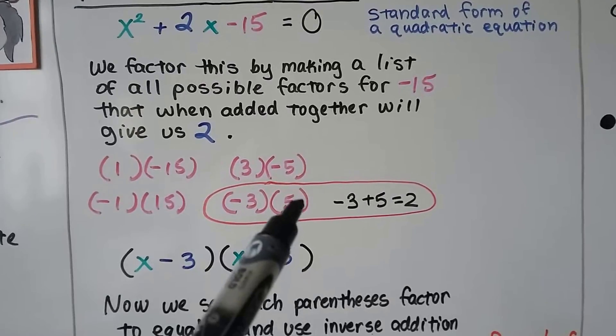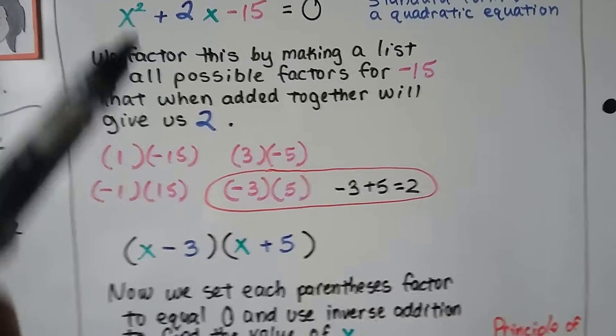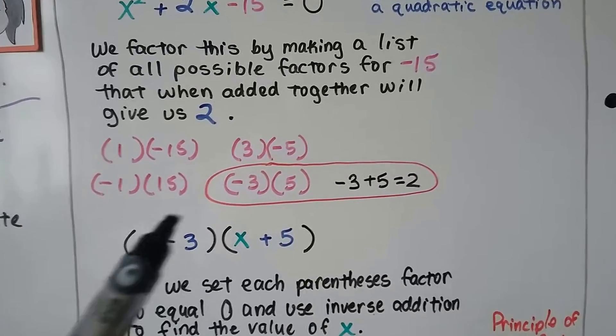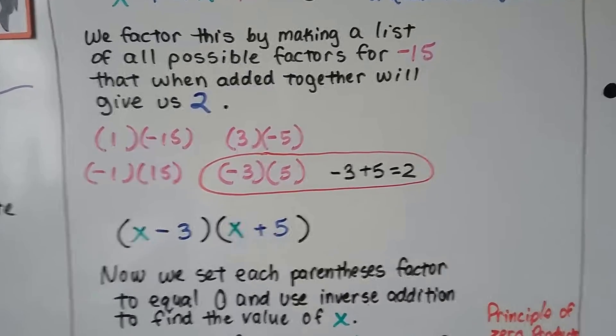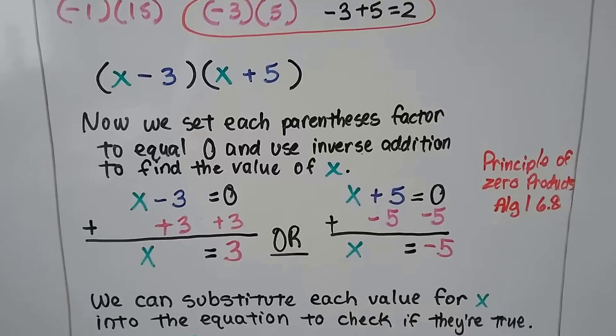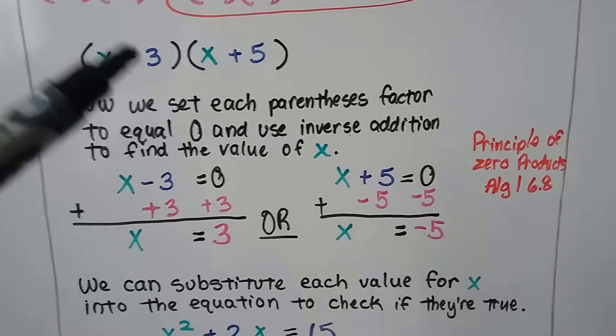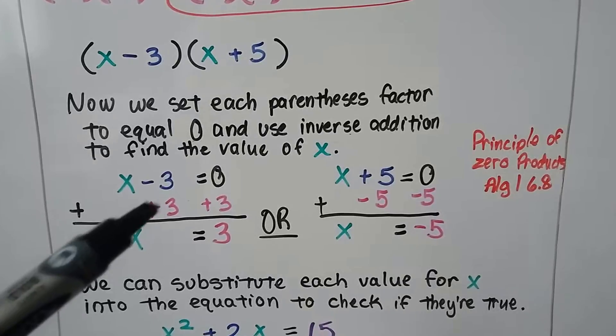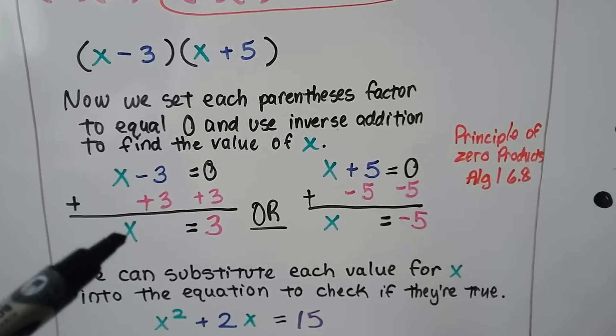So we've got a negative 3 and a 5. We write two sets of parentheses because it starts with an x squared. We put an x in the front of this one and an x in the front of this one. And we put in our negative 3 here and our positive 5 there. Now what we have to do is a thing called the principle of zero products. We set each parentheses factor to equal 0 and we solve for x.